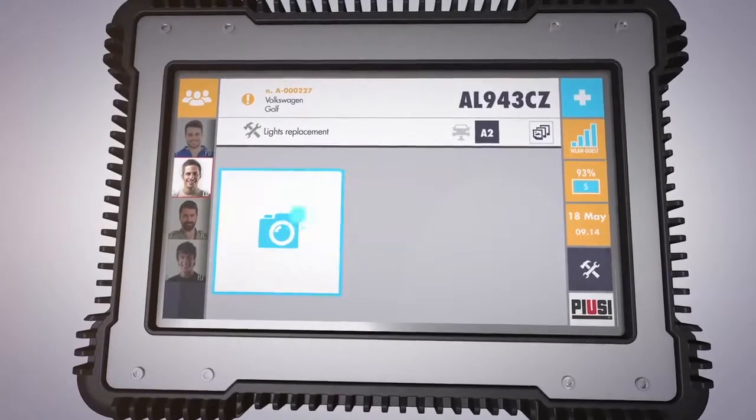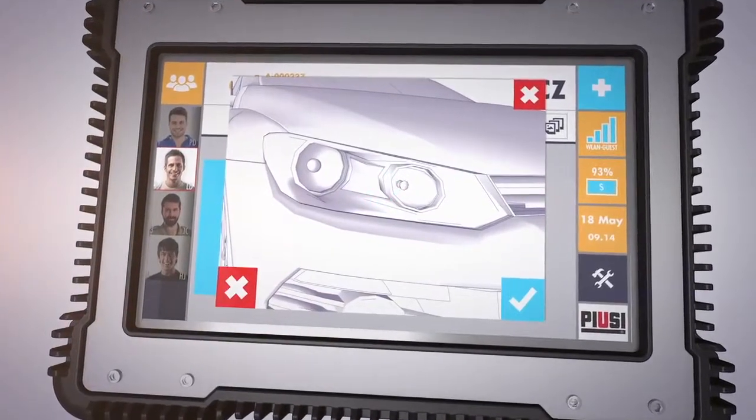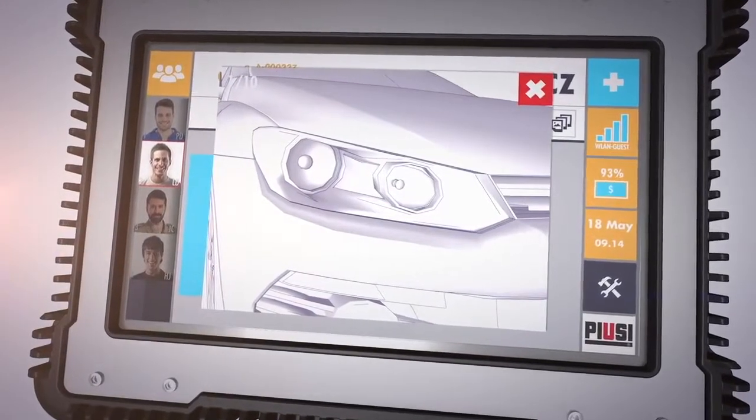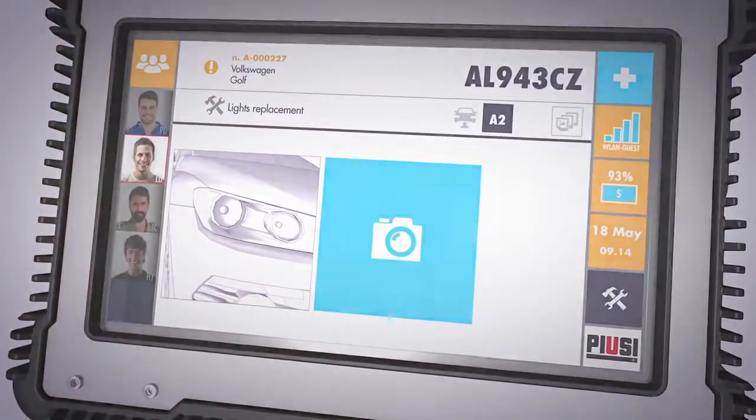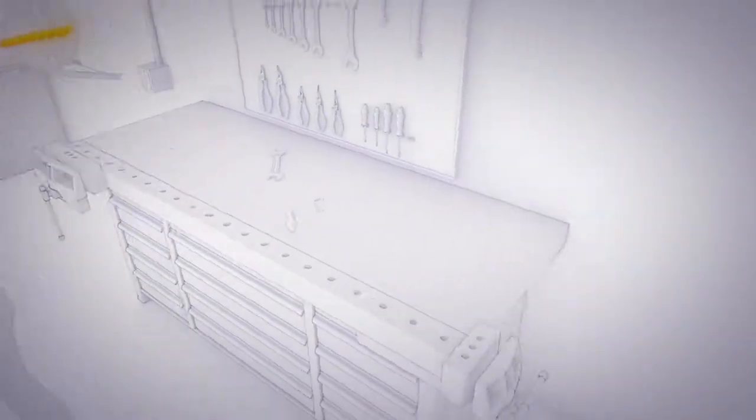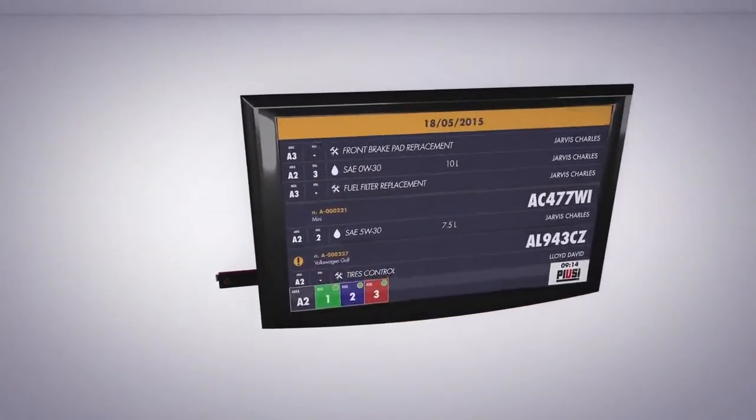And what's more? Just one click and you can photograph damaged parts and spare parts to document to the customer what has been done to his car. All of these actions are immediately transmitted to Pusey Dongle 2.0.